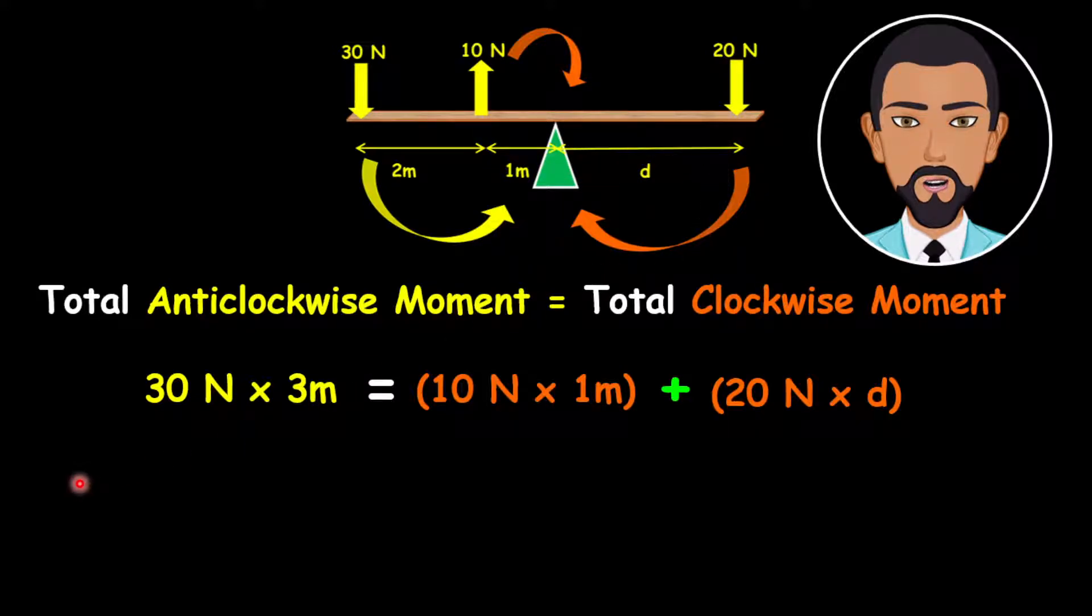Now once we have this set out, we can go ahead and start to work out our calculations. So 30 newtons multiplied by 3 meters will give us 90 newton meters. Now this is equivalent to 10 times 1, which is 10 newton meters, plus 20 times D.